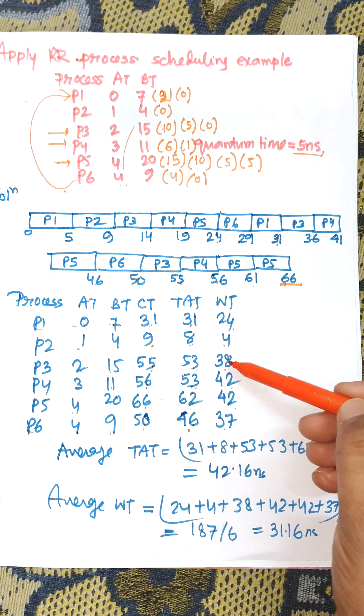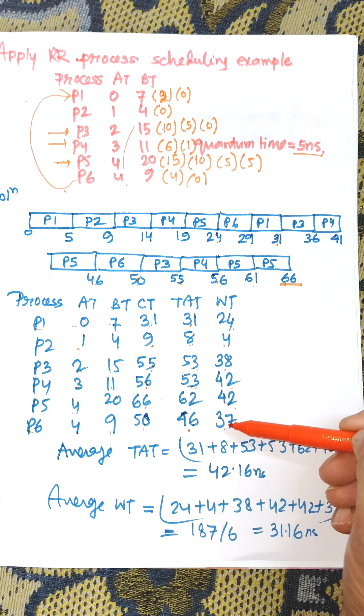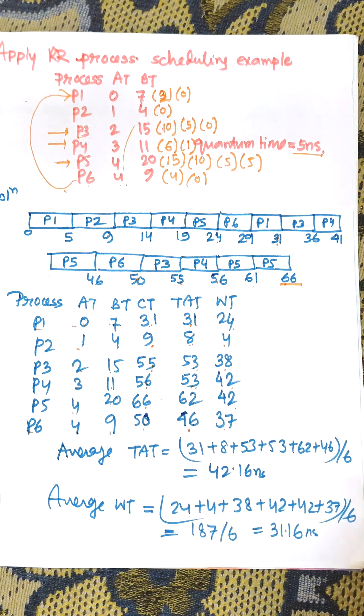Average waiting time is 24 plus 4 plus 38 plus 42 plus 42 plus 37, divided by 6, which equals 31.16 nanoseconds.